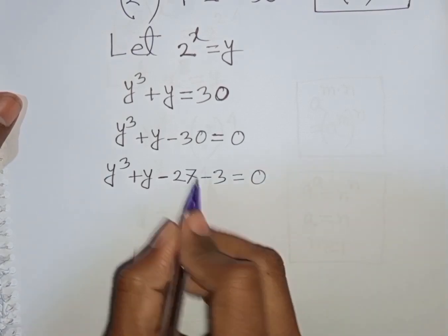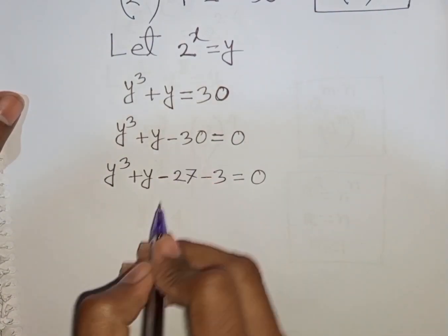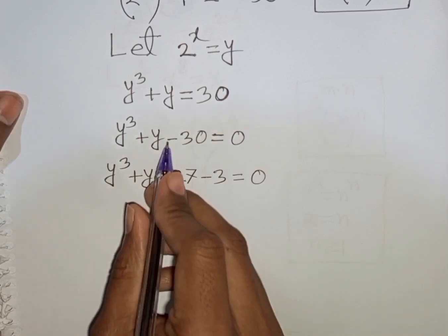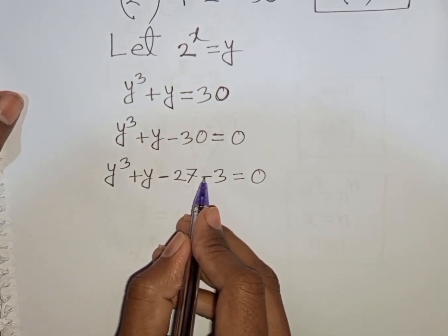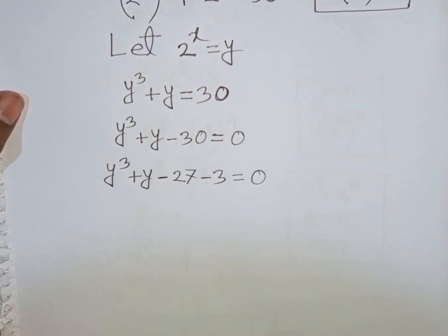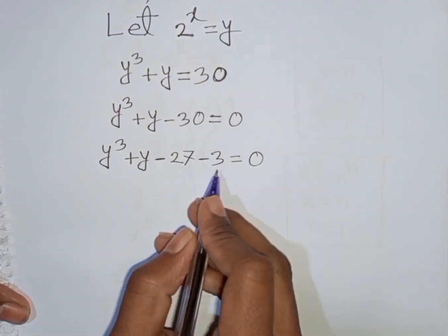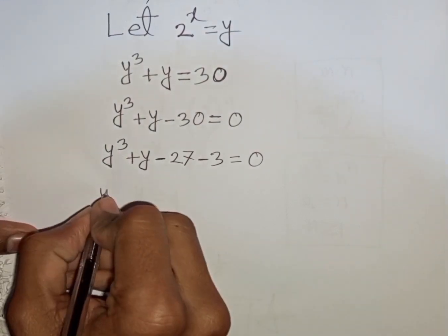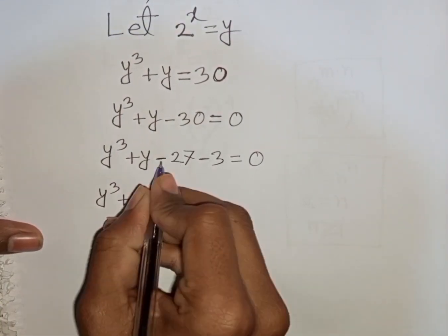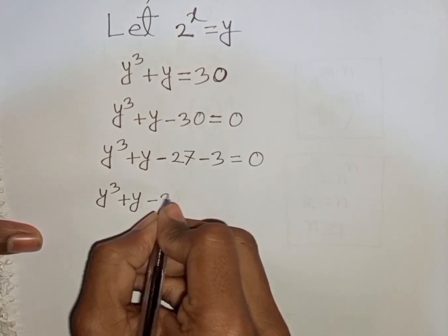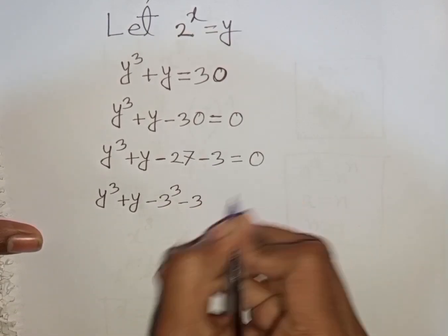How to understand this? Pay attention here. The nearest cubic number to 30 is 27. So minus 30 can be written as minus 27 minus 3. Most of the time you can understand this process. Now we have y cubed plus y, then minus 27 is the same as minus 3 cubed, then minus 3, is equal to 0.